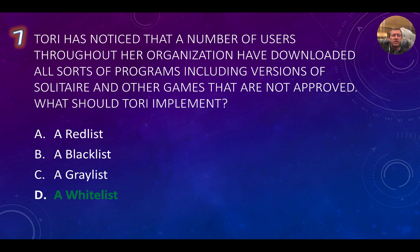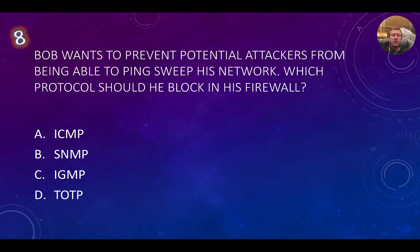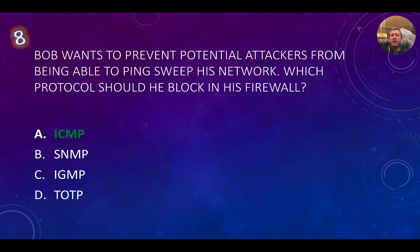Question eight: Bob wants to prevent potential attackers from being able to ping sweep his network. Which protocol should he block in his firewall? Knowing your acronyms is key: ICMP is the Internet Control Message Protocol, SNMP is the Simple Network Management Protocol, IGMP is the Internet Group Management Protocol, and TOTP is time-based one-time passwords. We can eliminate D. SNMP is not used for pings, and IGMP is used for multicasting. ICMP has echo request and echo reply — so blocking ICMP in the firewall prevents pinging. The correct answer is A, ICMP.